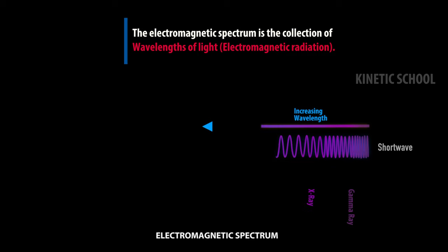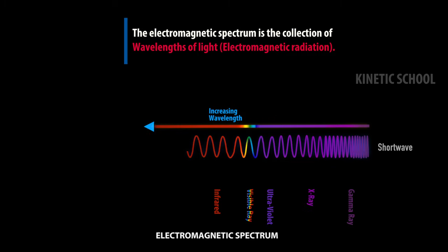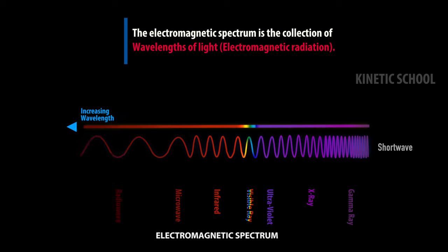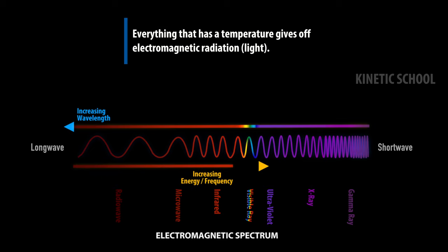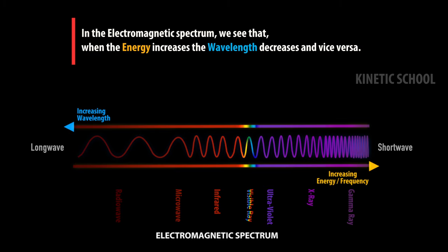The electromagnetic spectrum is a collection of wavelengths of light or electromagnetic radiation. Everything that has a temperature gives off electromagnetic radiation.